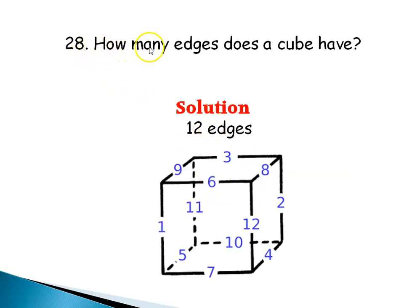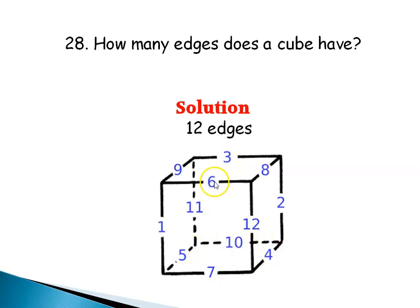Question 28: How many edges does a cube have? Think of a cube of sugar. Counting all the edges — the lines — we get 1, 2, 3, 4, 5, 6, 7, 8, 9, 10, 11, 12. So a cube has 12 edges.